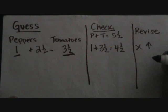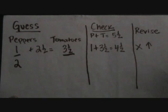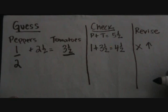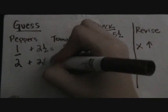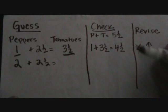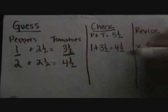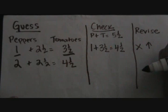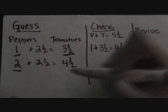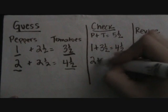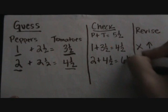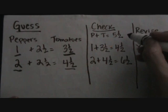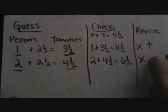The next amount I am going to guess is that she uses two cups of peppers. Whatever amount she uses in peppers, she needs to have used two and a half cups more of tomatoes. Therefore, I add two plus two and a half, which gives me four and a half. So if she uses two cups of peppers, she would have used four and a half cups of tomatoes. To check: two plus four and a half equals six and a half. The total should have been five and a half, so my guess is wrong and I need to go down.